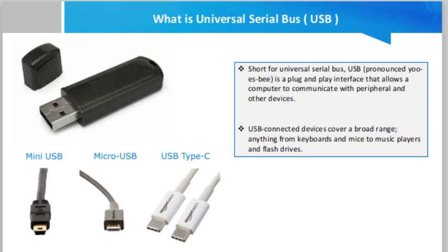Micro USB, announced in 2007, was designed to replace mini USB. The two varieties of micro USB are micro A and micro B, both featuring a connector size of 6.85 by 1.8 millimeters, although micro A connectors feature a larger maximum overmold size. Micro USB cables are often used to connect computer peripherals, video game controllers, and for charging smartphones.